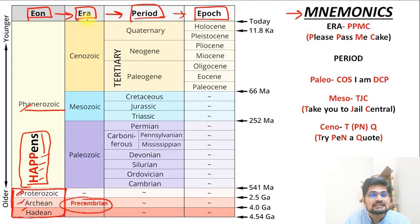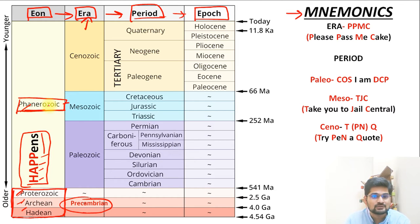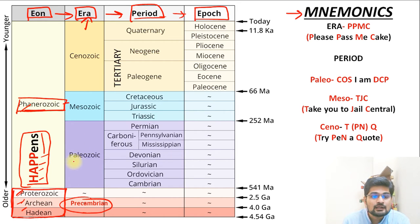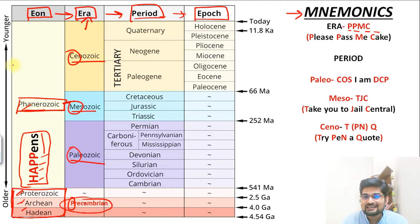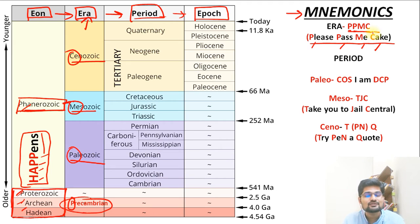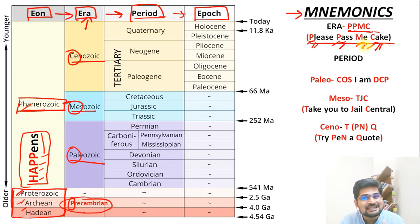All the eras we study fall within the Phanerozoic eon, representing the more recent Cambrian times. The three eras are Paleozoic, Mesozoic and Cenozoic. To remember these alongside the Precambrian, use the mnemonic PPMC — 'Please Pass Me Cake': P for Precambrian, P for Paleozoic, M for Mesozoic, and C for Cenozoic.